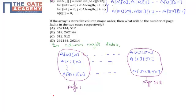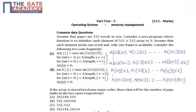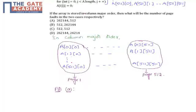Now let us consider Code Fragment A. For Code A, the values accessed are A[0][0], A[1][0], and so on up to A[511][0]. These are all present in page 1. So accessing page 1 gives us all values for the first column. If we get page 1, we get all values for that iteration.